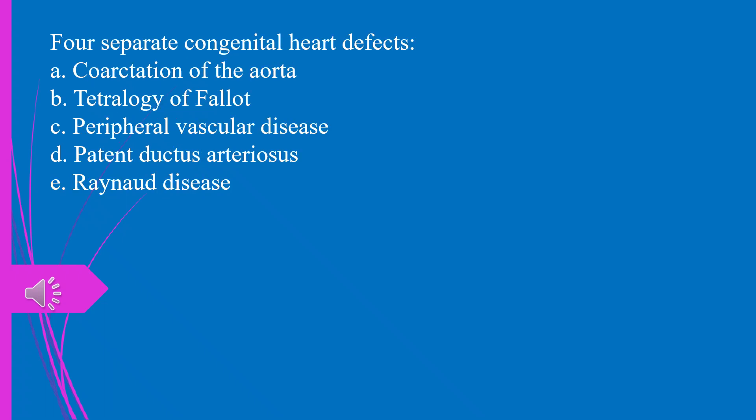Four separate congenital heart defects, A. Coarctation of the aorta. B. Tetralogy of Fallot. C. Peripheral vascular disease. D. Patent ductus arteriosus. E. Raynaud disease. The answer is B. Tetralogy of Fallot.